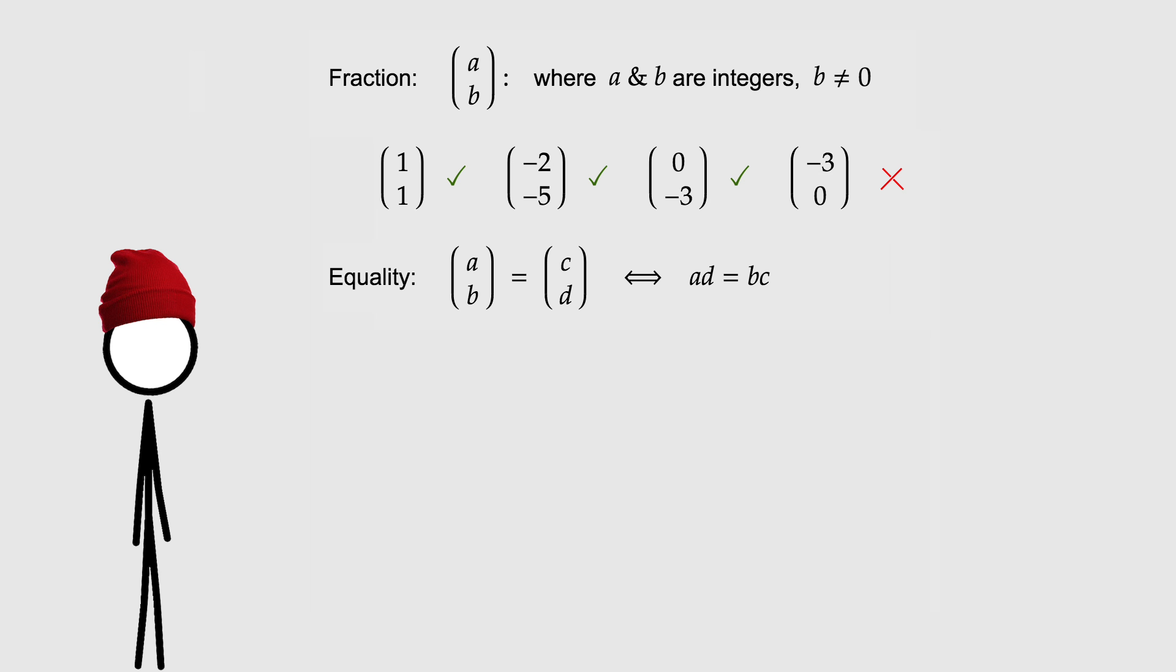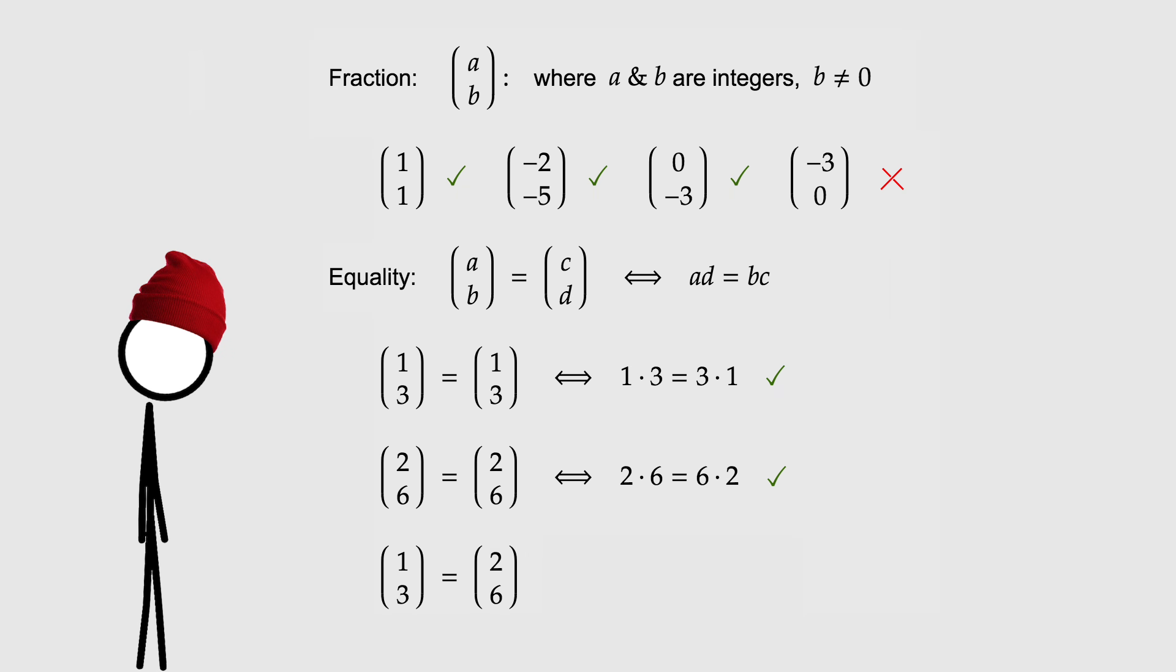All right, then, how do we do it? First, I'm going to define a new type of mathematical object called a fraction. Remember, we don't know about fractions yet, only the integers. Now, a fraction will be defined as a pair of integers, a and b, where b is not 0. For example, 1, 1 is a fraction, negative 2, negative 5 is a fraction, 0, negative 3 is a fraction, but negative 3, 0 is not a fraction. A pair of integers with the second one not 0.